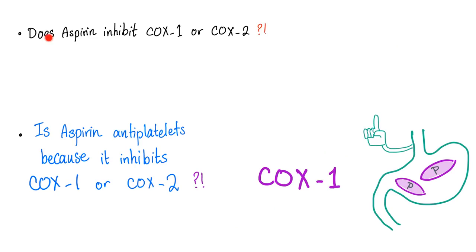There is even a disease named after this called aspirin-exacerbated respiratory disease. Three questions: Does aspirin inhibit cyclooxygenase 1 or 2? Both. Is aspirin anti-platelet because it inhibits COX-1 or COX-2? COX-1. Third question: Is aspirin bad for your stomach because it inhibits COX-1 or COX-2? The answer is COX-1.